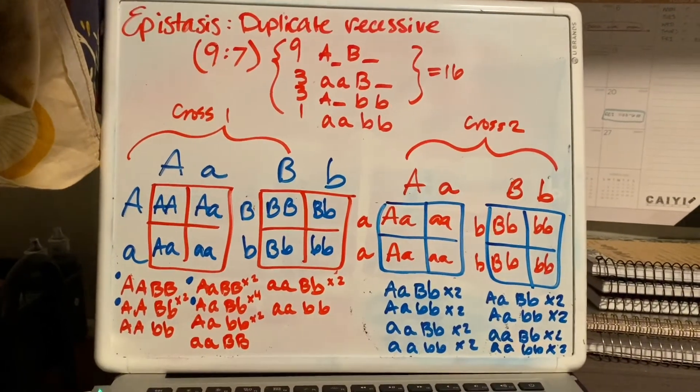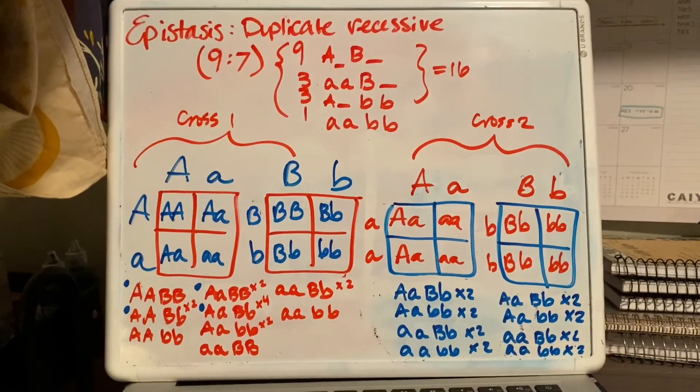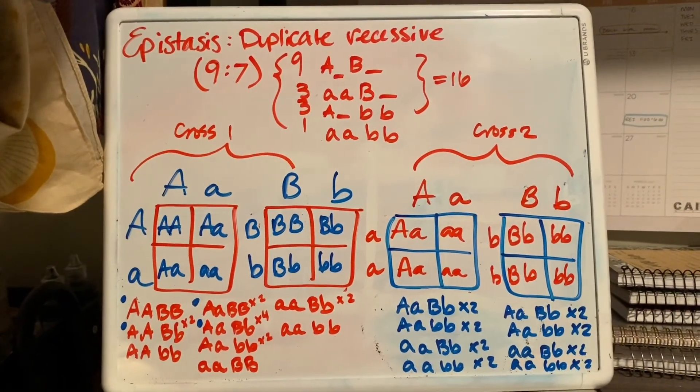Now for cross 2, it's a little bit different because it is not a dihybrid cross, which is why we get kind of a 4 to 4 to 4 to 4 ratio.